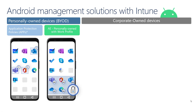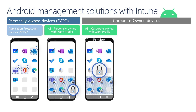Some organizations may require devices to be enrolled into mobile device management in order to gain greater control over device compliance and to be able to deploy corporate apps, certificates, and enforce restrictions on personal devices. With the Android enterprise personally owned with work profile option, there is clear separation between personal and corporate data on the device, and only the corporate portion of the personal device can be managed.